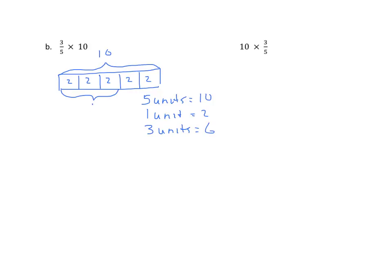This one, we have 3 fifths times 10. So we'll take our whole, once again, is 10. And then we're going to partition it into 5 equal parts. We'll bracket 3 of those. If we take a look at this, each one of these is worth 2. So, in the thinking we've talked about in the other lessons is, we had 5 units equals 10. 1 unit equals 2. 3 units equals 6. So the answer is 6.